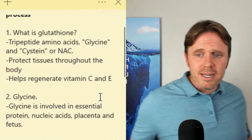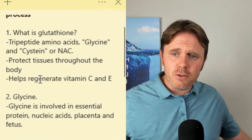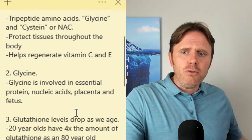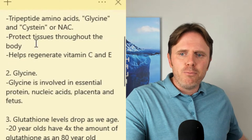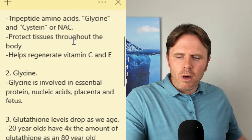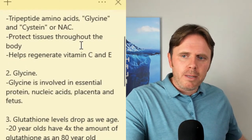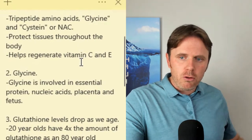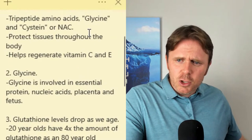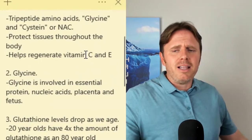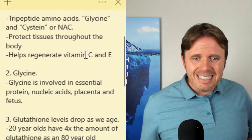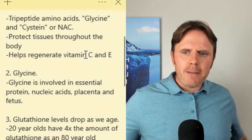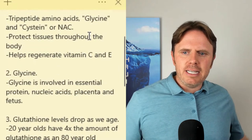Glycine has a lot of benefits. It's the second most important amino acid for the tripeptide glutathione. It's involved in protein, nucleic acid, and placenta — if you want to avoid stretch marks when pregnant, get collagen and bone broth in there. It helps with placenta growth, skin growth, and connective tissue. Glycine is also really important for the enterocytes in the gut — it helps build up that gut lining and decreases the chance of leaky gut.